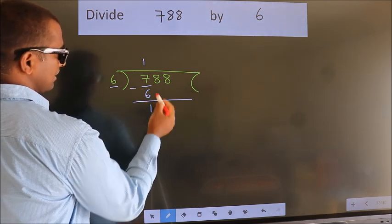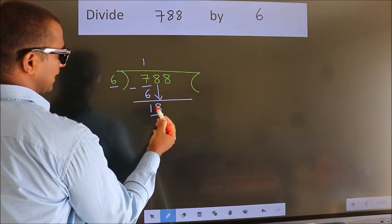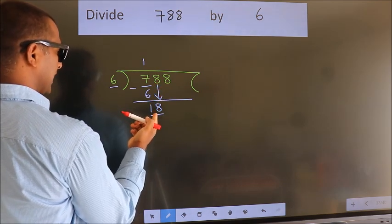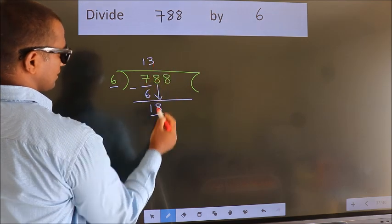After this, bring down the next number. So 8 down. So 18. When do we get 18 in the 6 table? 6 threes 18.